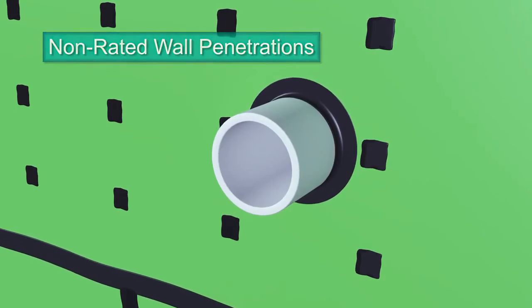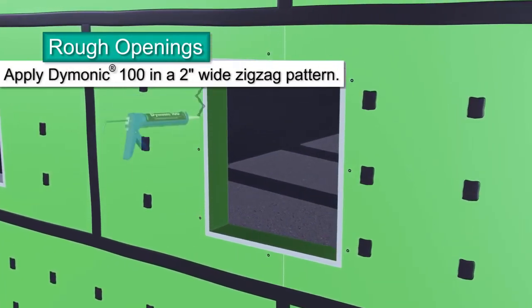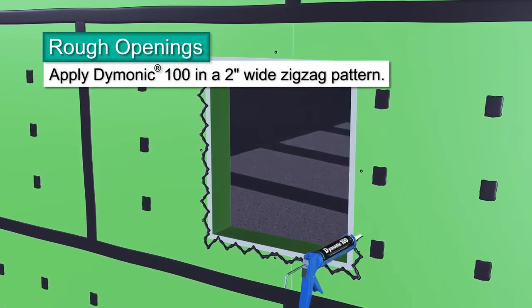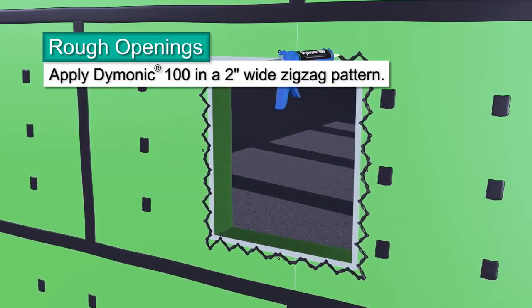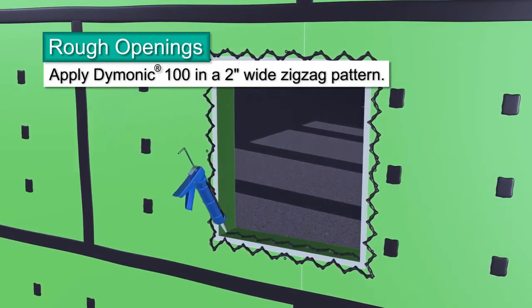Rough openings are detailed in a similar fashion as outside corners. On the face of the exterior sheathing, apply beads of Dimonic 100 sealant in a 2-inch wide zigzag pattern around the perimeter of the panel's rough opening. In the same manner, apply the sealant to the sill, jams, and head.